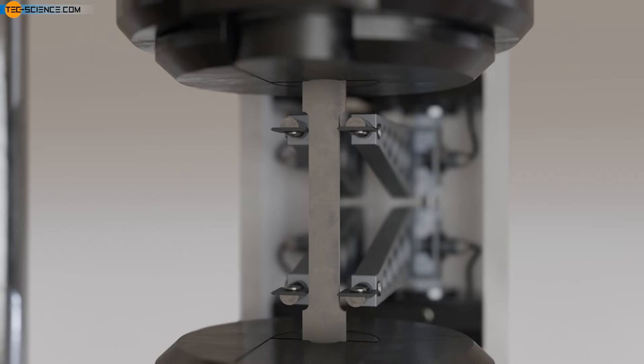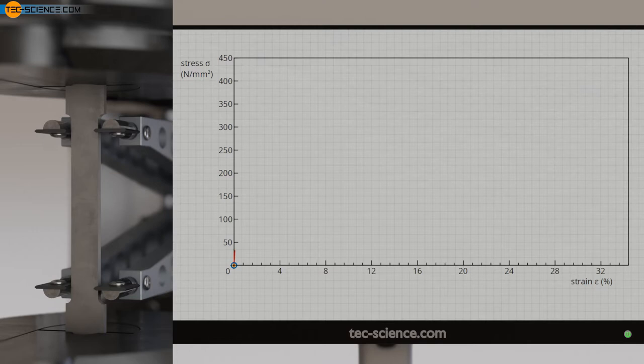Using the example of a flat tensile specimen, we briefly explain the different areas in the recorded stress strain diagram.